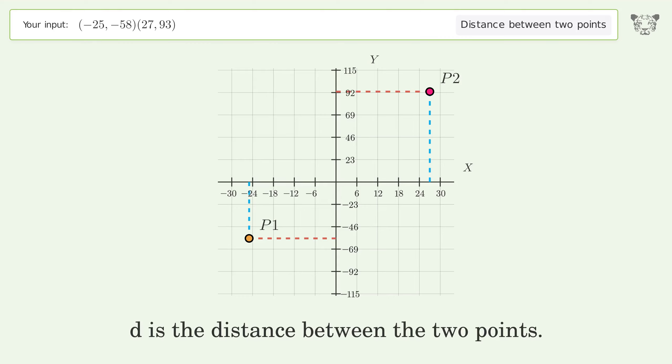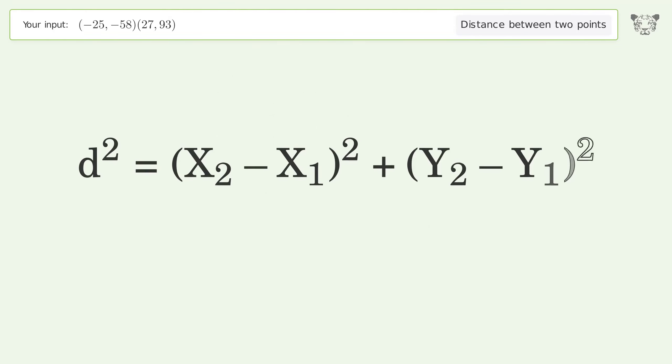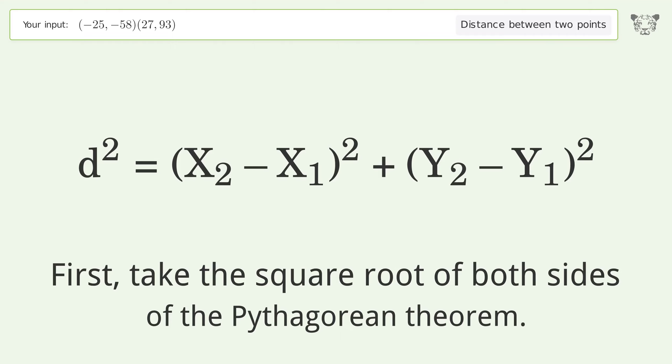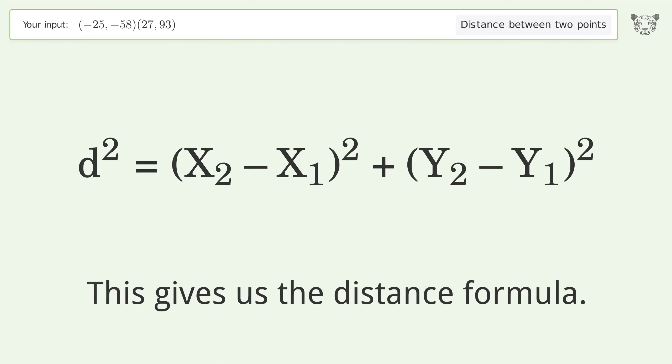d is the distance between the two points. First, take the square root of both sides of the Pythagorean theorem. This gives us the distance formula.